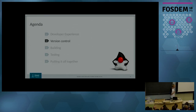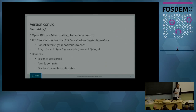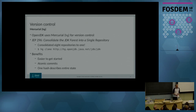Let's get into this by starting with version control. OpenJDK uses Mercurial, or HG for short, as the version control system. The big thing that happened in the last year with regard to developer experience here was JEP-296: consolidate the JDK forest into a single repository, which consisted of eight repositories. So OpenJDK for any given coherent codebase was spread across eight repositories, which was a bit of an issue if you wanted to work on both Hotspot and JDK.